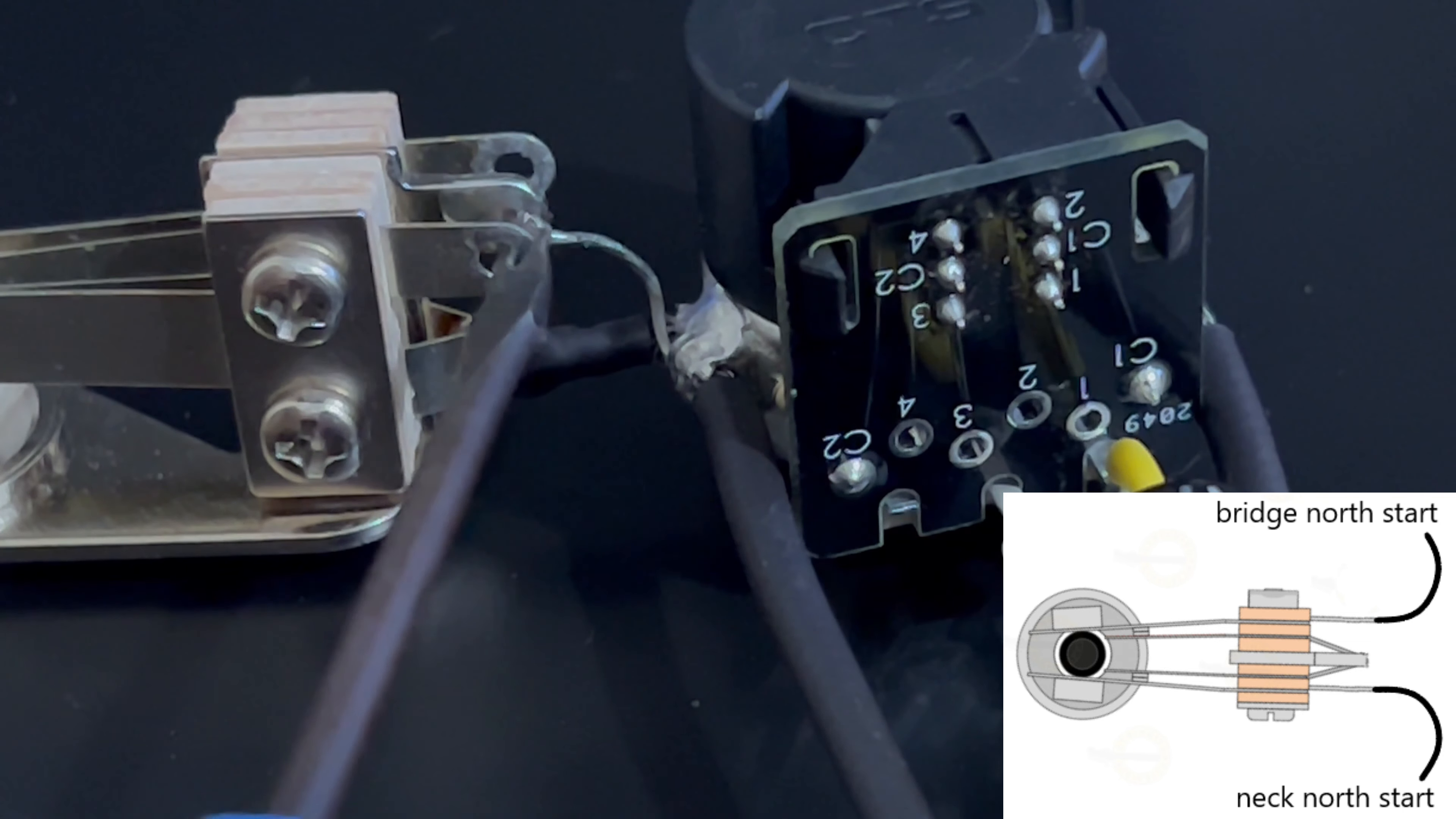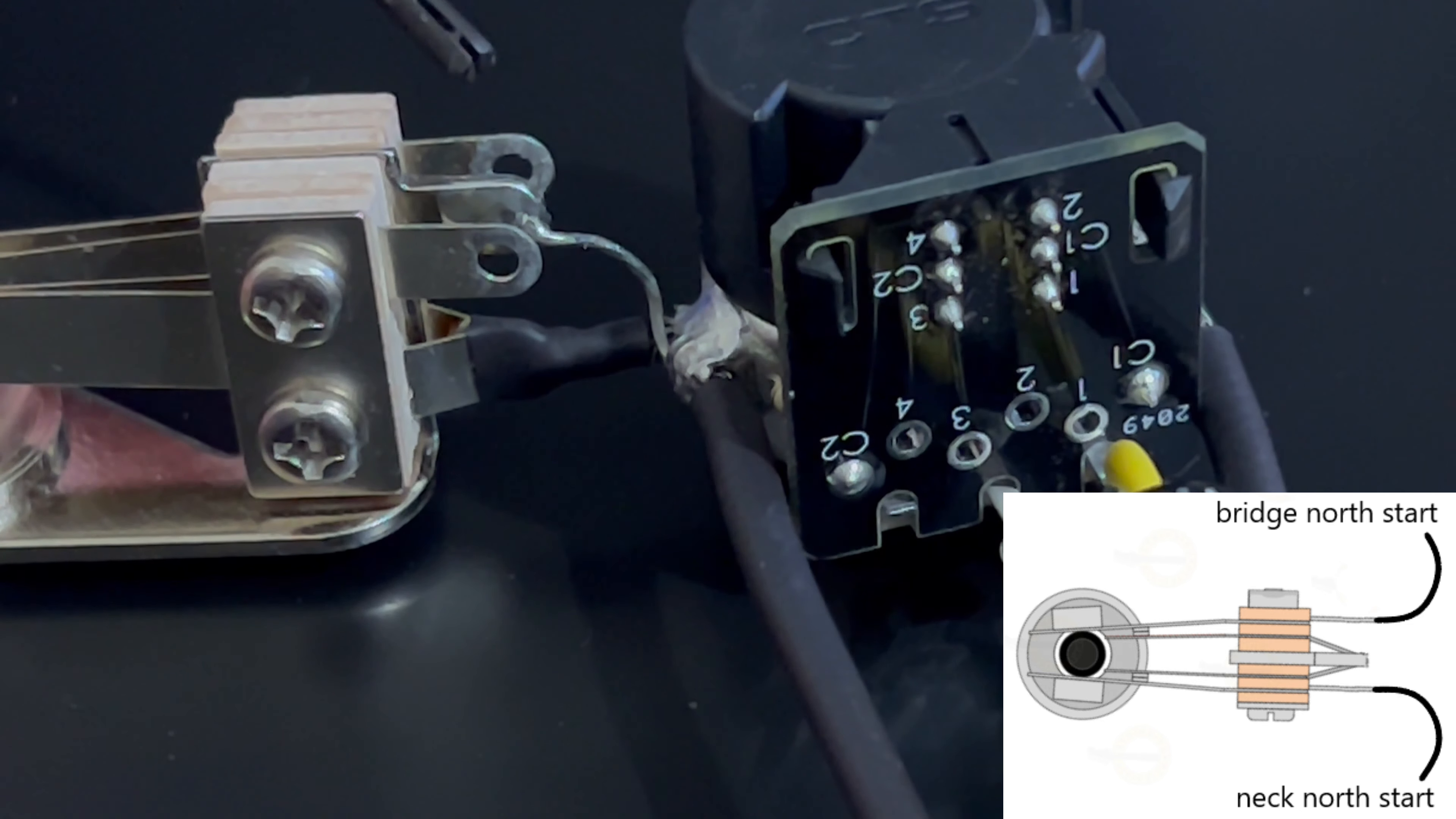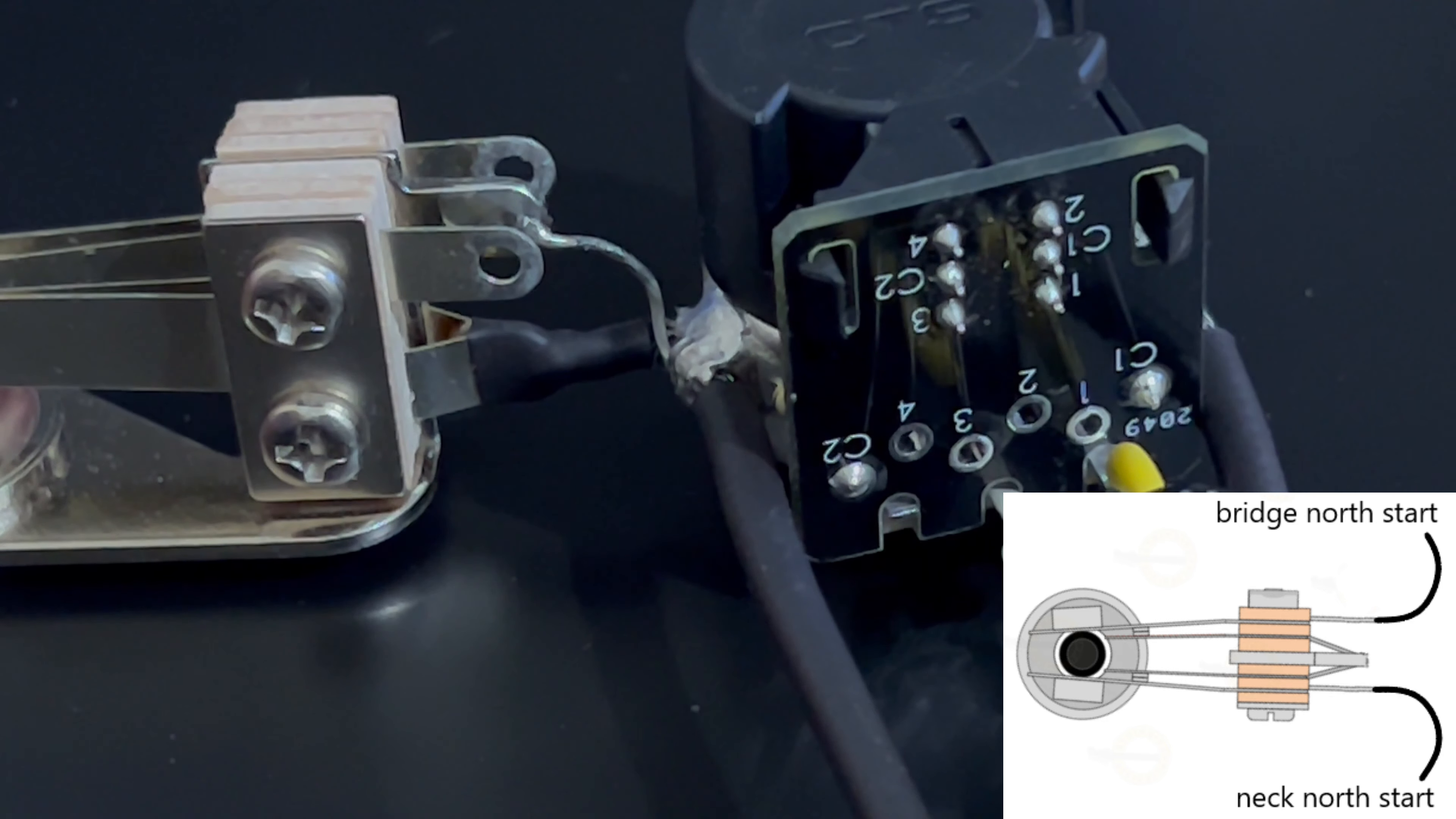So for the neck humbucker, it's going to this solder lug here on the switch, and for the bridge, it's going to the one on the other side, just there. That's your north start of each respective humbucker.